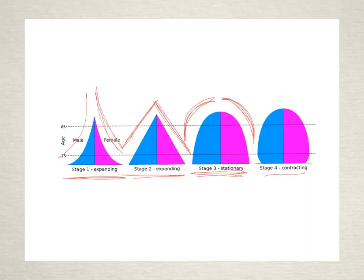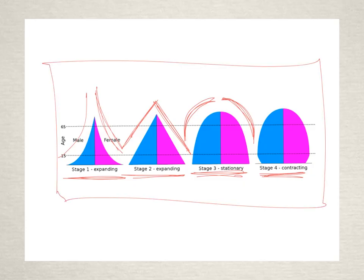And then finally we saw the Chinese example, which is contracting, which means the population is going down. If those numbers continue, there will be less people in that country over time. So they're the four main categories that we see with population pyramids that we can look out for when we're looking to see these trends.